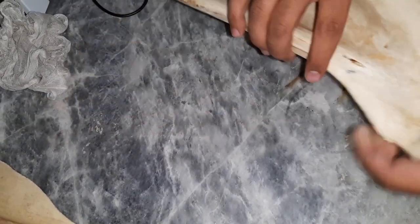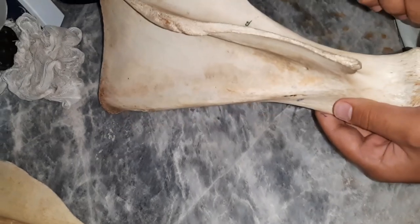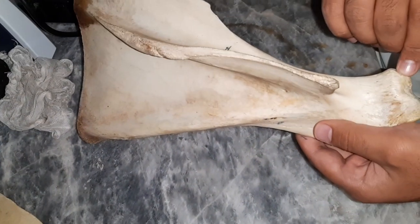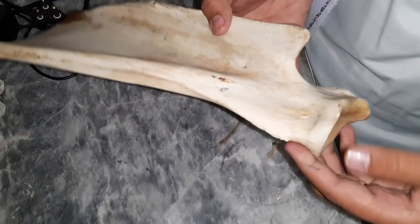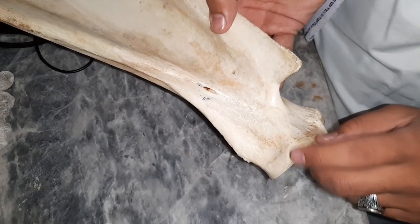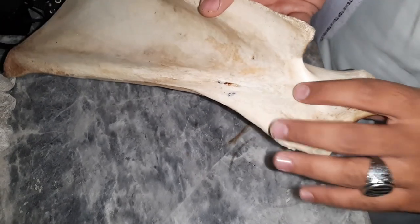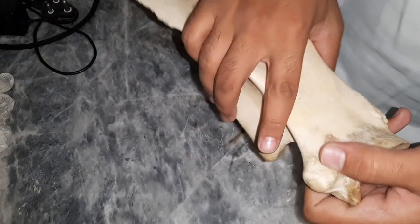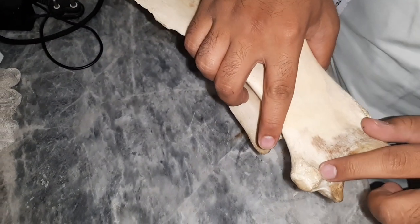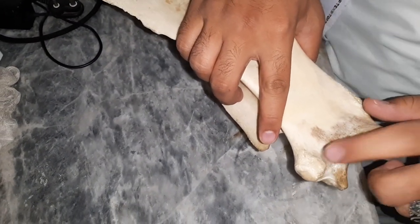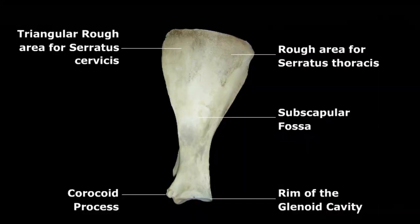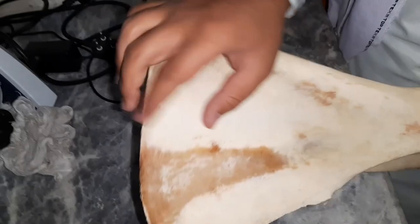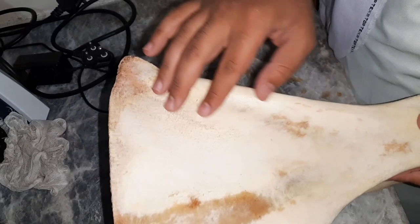This is the glenoid cavity. Cranial to the glenoid cavity is the supraglenoid tubercle, and caudal to it is the infraglenoid tubercle. Medial to the supraglenoid tubercle is the coracoid process. Now we are coming towards the characteristics of the medial surface.